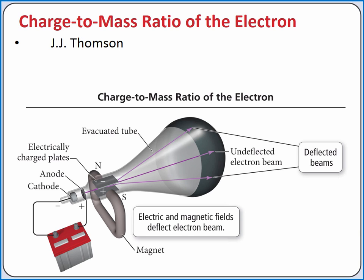J.J. Thomson also found the charge to mass ratio of the electron by deflecting electron beams. A moving negative charge will be deflected toward the positive terminal of an externally applied electric field. And a moving charge through a perpendicular externally applied magnetic field will also experience a force called the Lorentz force, which is perpendicular to both the externally applied magnetic field and the direction of the charge's movement. Based on the externally applied fields and the deflection, the charge to mass ratio of the electron can be found.